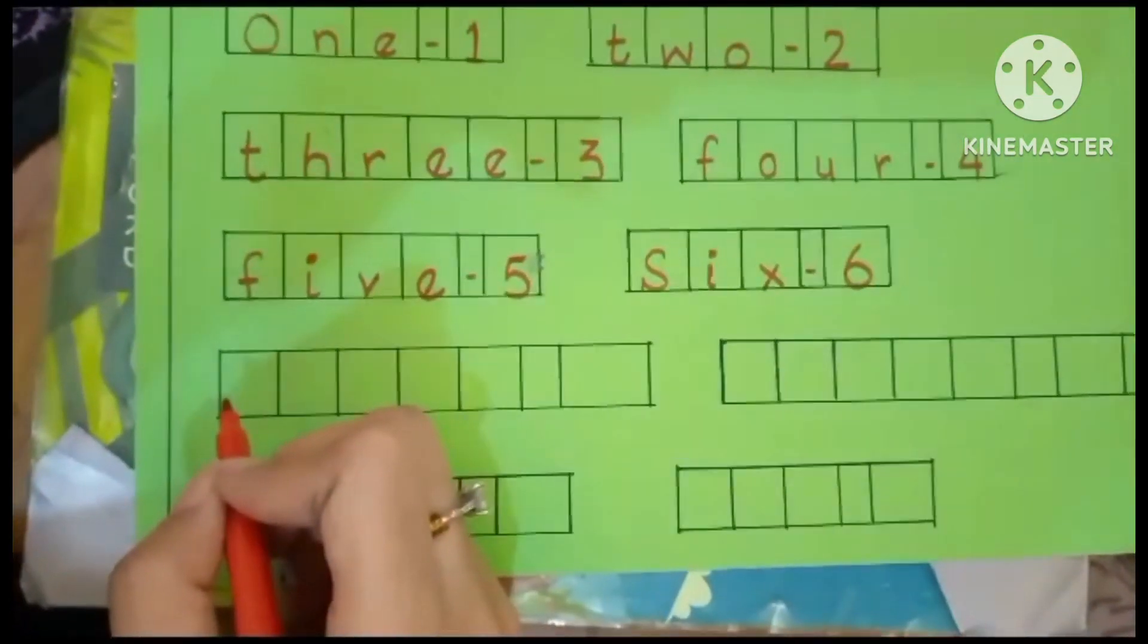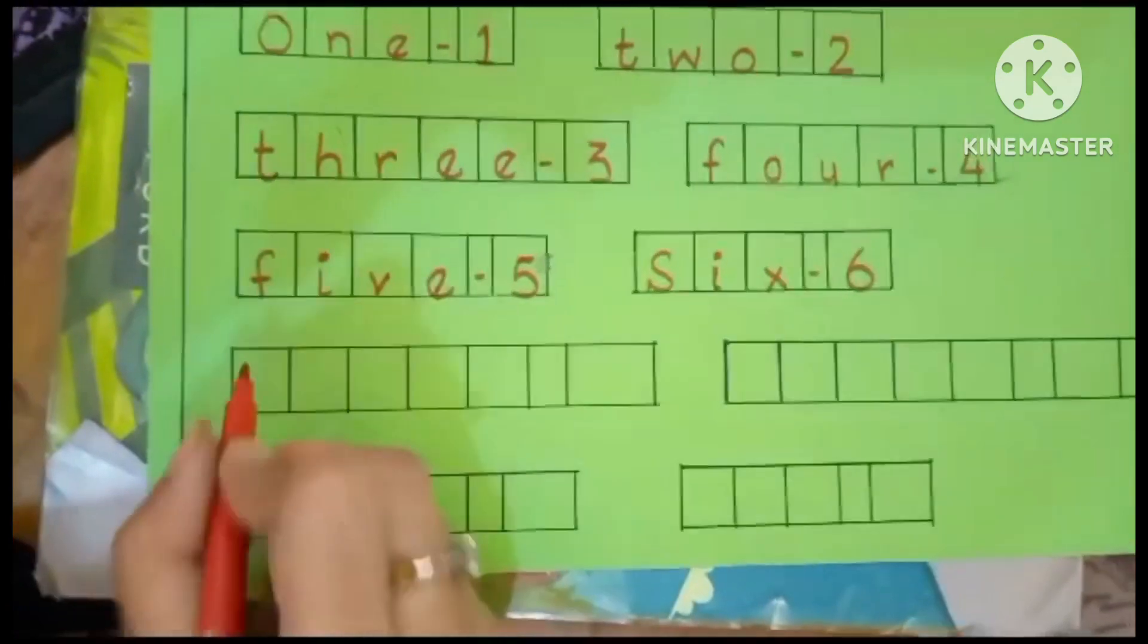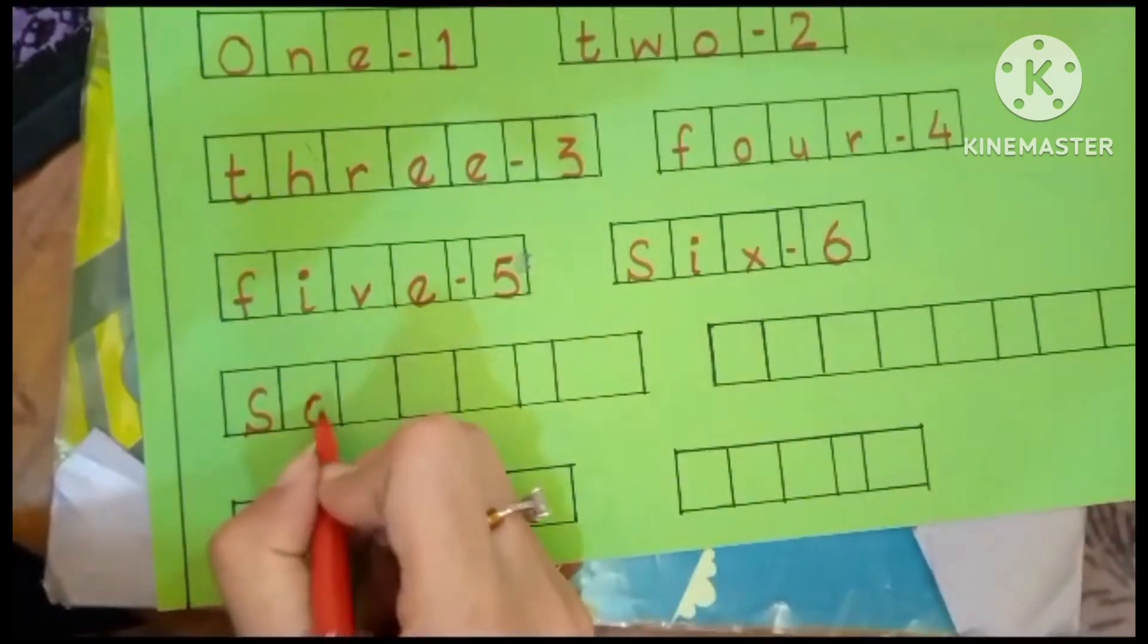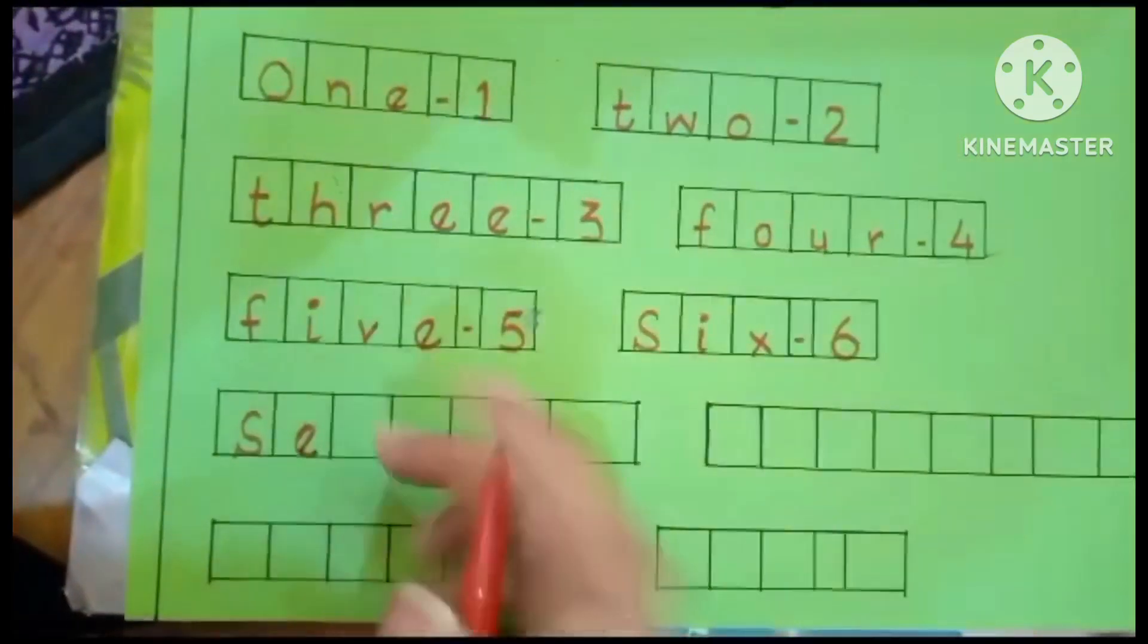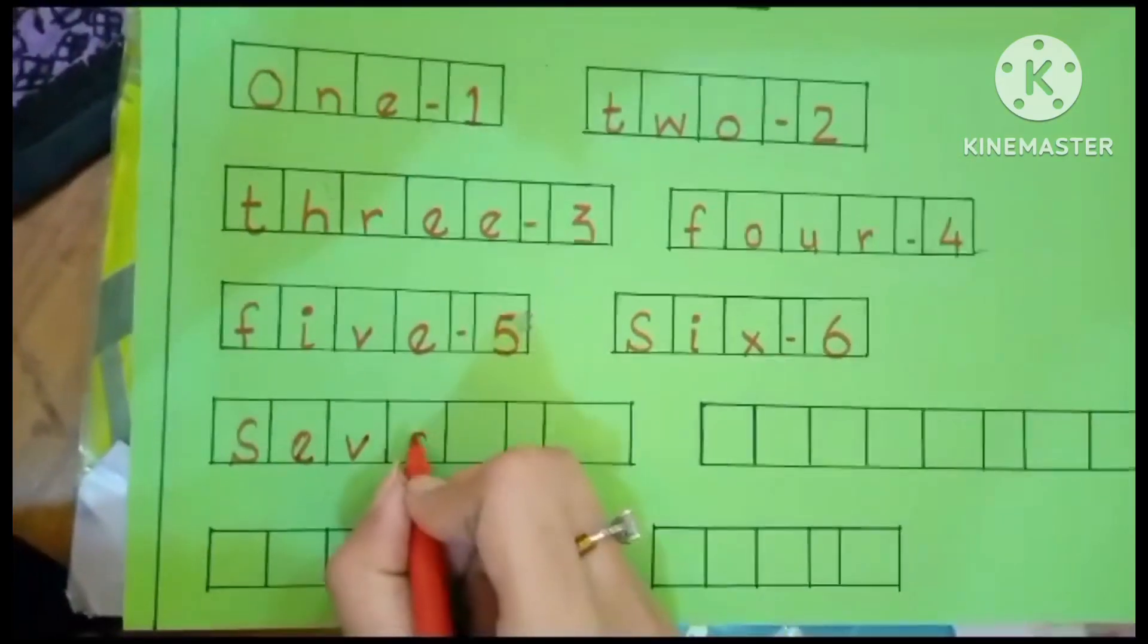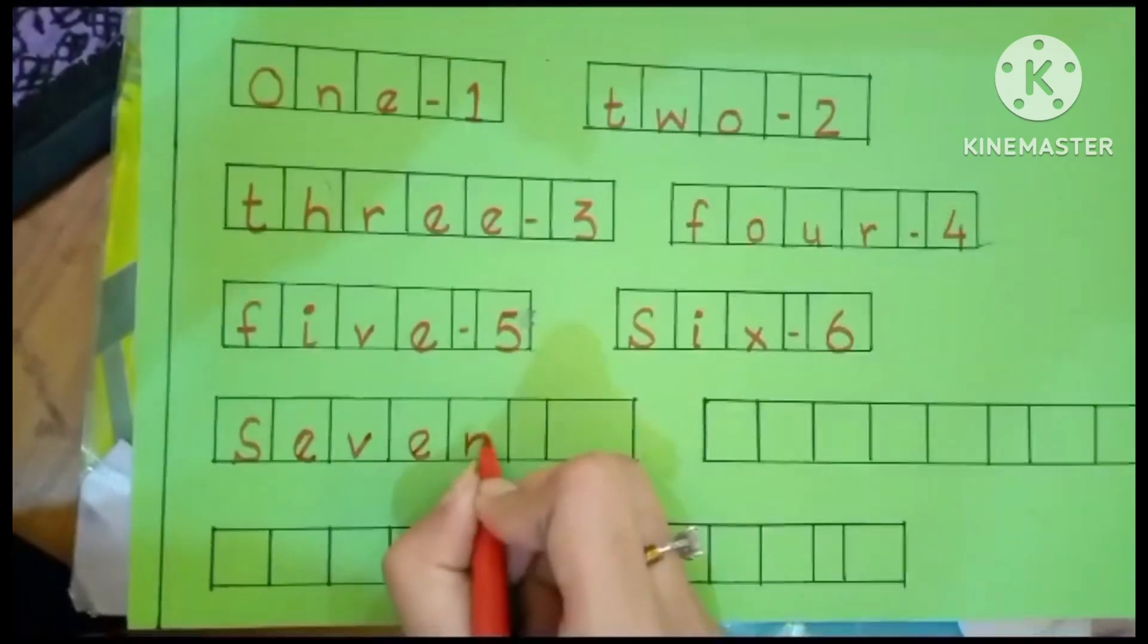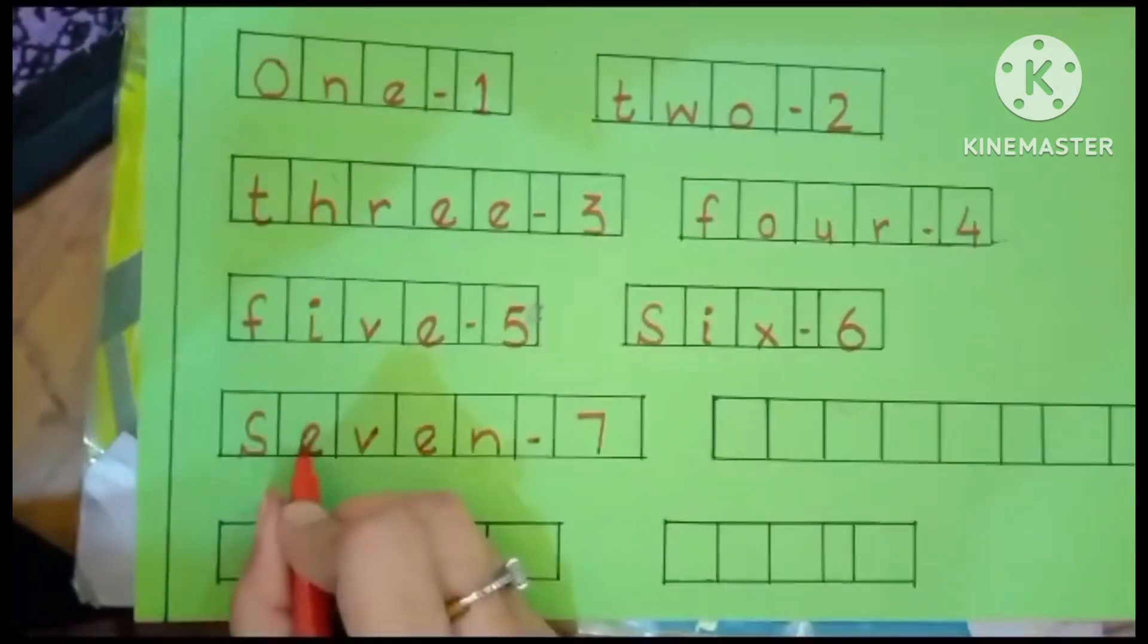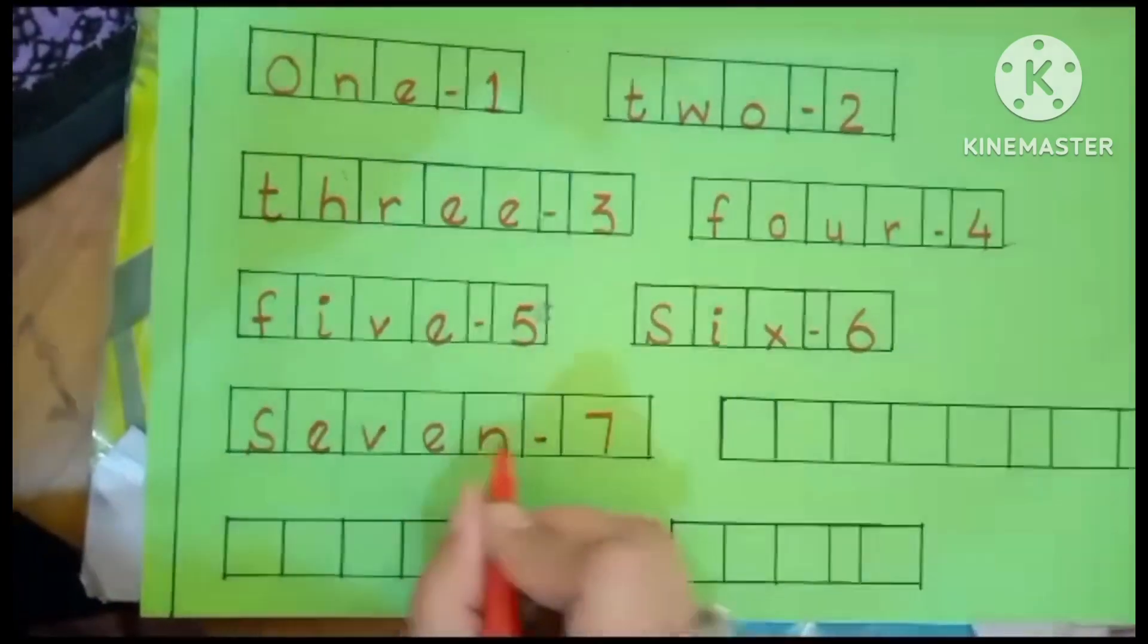Now what's the spelling of seven? It's S-E-V-E-N, seven. S-E-V-E-N, seven.